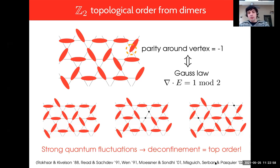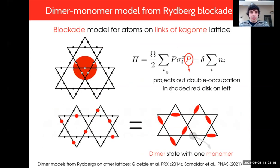In particular, the paper by Misguich, Serban, and Pasquier managed to write down an exactly solvable dimer model on the kagome lattice which exactly manages to realize this phase of matter. Our question was, can we realize such a dimer model using Rydberg atoms?